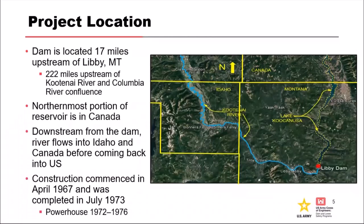Getting into project background - where is Libby? Libby is in northwestern Montana. You can see here's the dam. It's 222 miles upstream of the Kootenay and Columbia River confluence. The reservoir is called Lake Kukanusa, which is a pretty cool name - the beginning is 'Ku' for Kootenay, 'kan' for Canada, and 'USA' - so Lake Kukanusa, because the reservoir extends into Canada and there's actually a treaty in place for this project. Also downstream of the dam, the river flows into Idaho and Canada before coming back into the US further downstream.